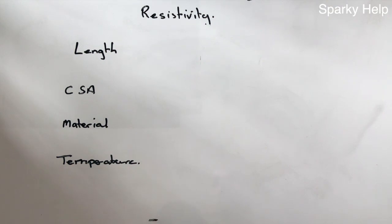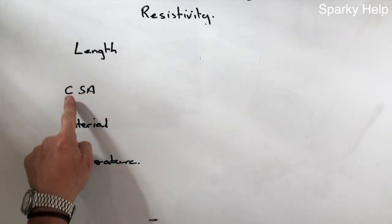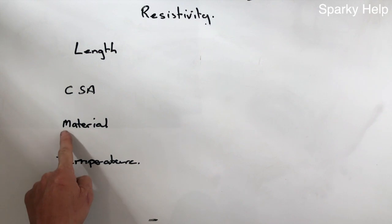In regards to resistance and resistivity, there are four things that impact the resistance of a conductor: length, cross-sectional area, the type of material, and the temperature.